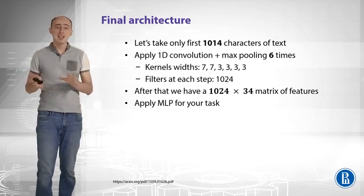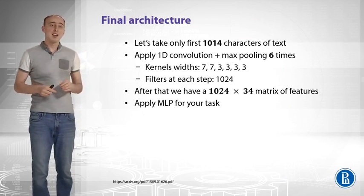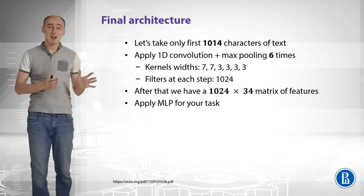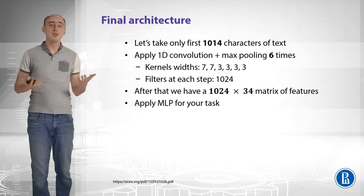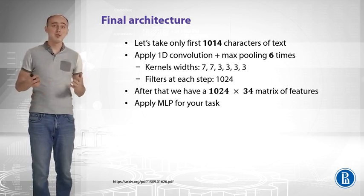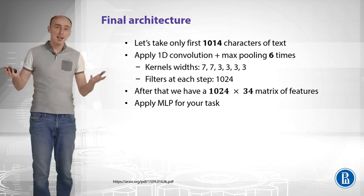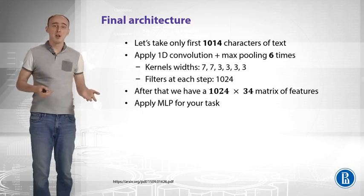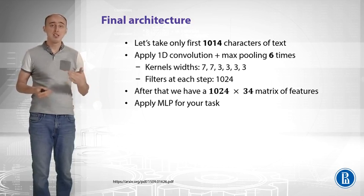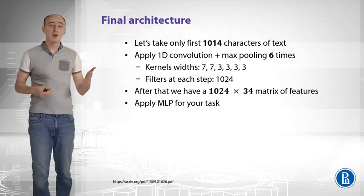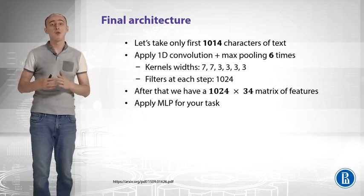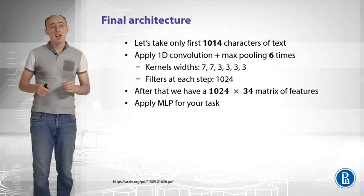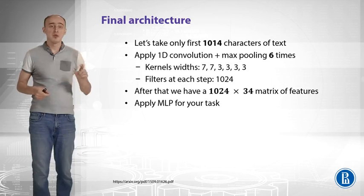Our final architecture looks like this. We take first 1,000 characters of text, and in certain datasets that makes sense. It doesn't make sense to read the whole text, maybe 1,000 characters will be enough. Then we apply 1D convolution plus max pooling six times. And we use the following kernel with seven, seven, and all the rest of threes. And we use 1,000 filters at each step.